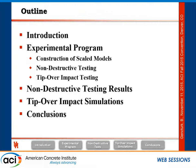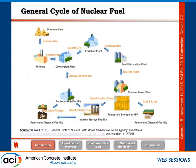This is the general cycle of nuclear fuel. It starts with mining, then there is conversion, then it goes to the fuel fabrication plant. It goes to the nuclear power plant, and after the fuel is depleted, you need to do something with it — either store it temporarily at the nuclear power plant or use an interim storage facility. In Europe and Asia, they also reprocess the fuel, which goes back to the conversion plant. The rest is disposed of in a permanent disposal facility.